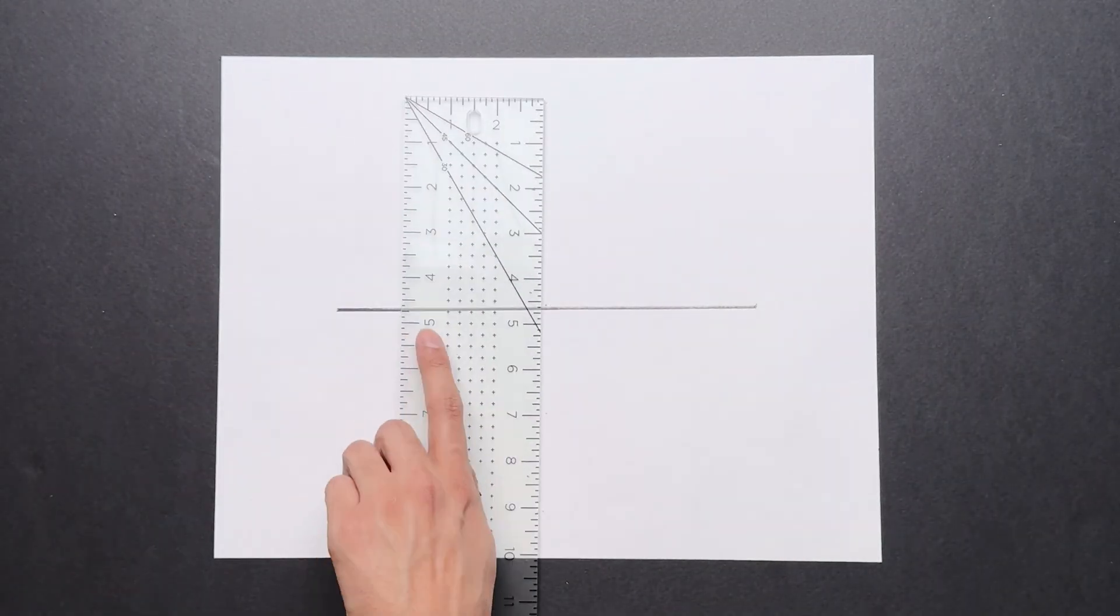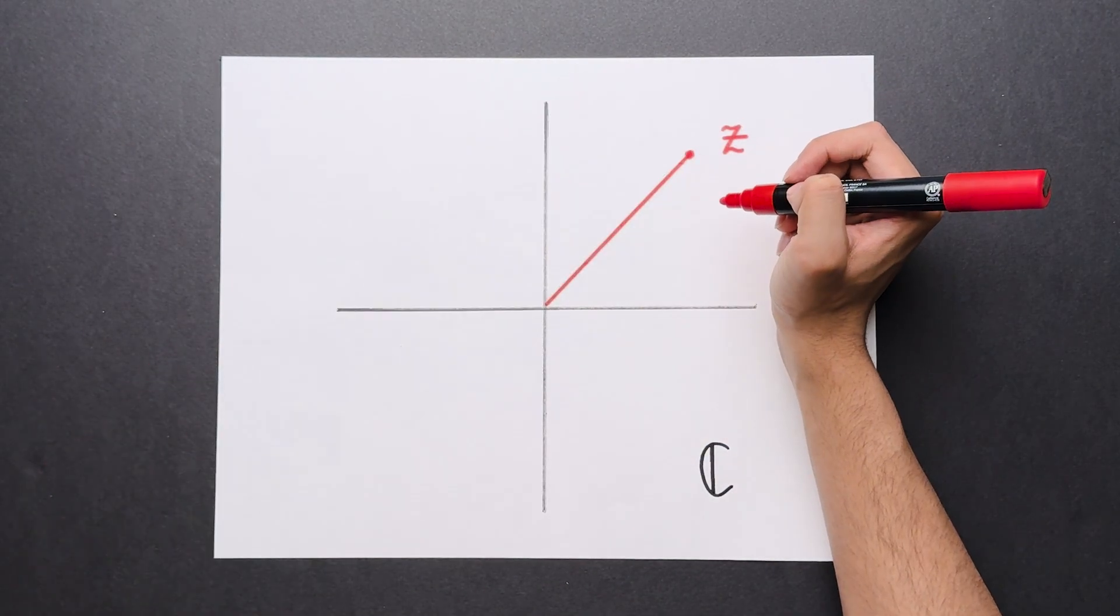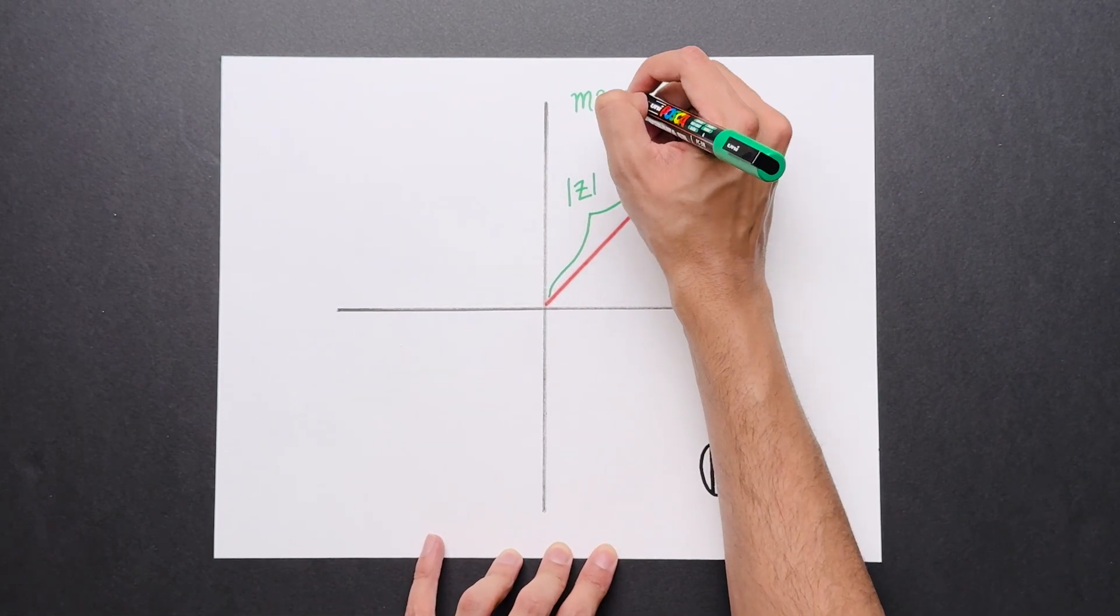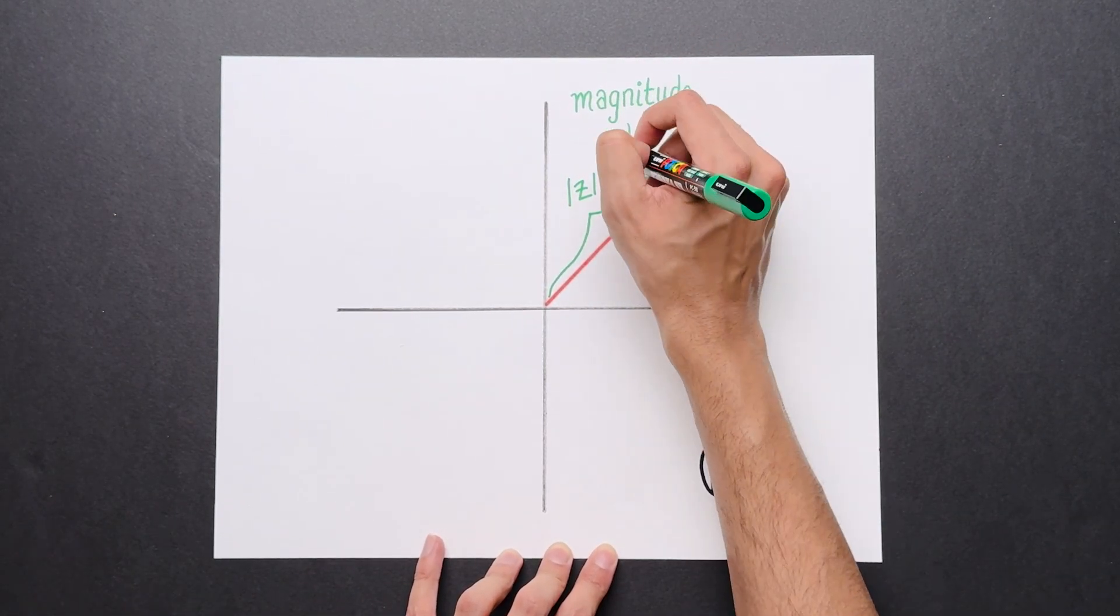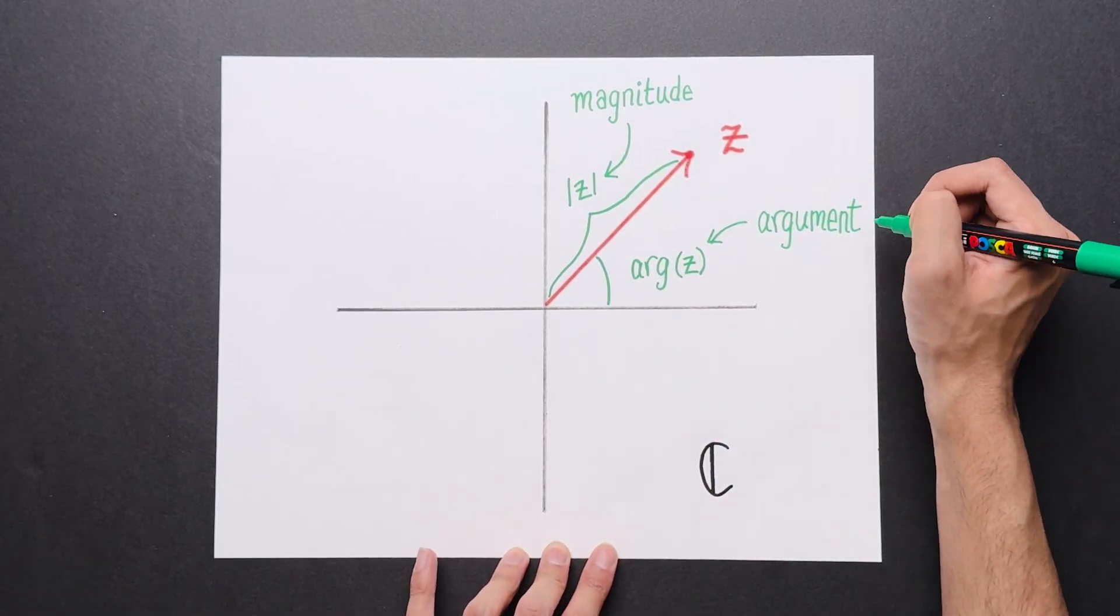We start at the very beginning, with the complex plane, C. It's a basic fact that every complex number can be visualized as an arrow in the complex plane. The length of that arrow is called the magnitude of z, denoted z in absolute value bars. And the angle of that arrow with the x-axis is called the argument of z, denoted arg z.